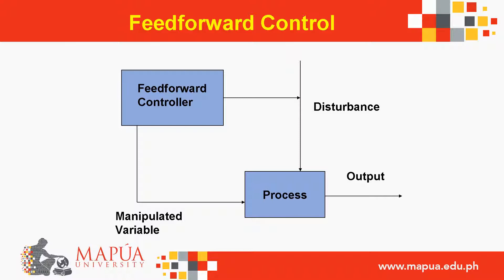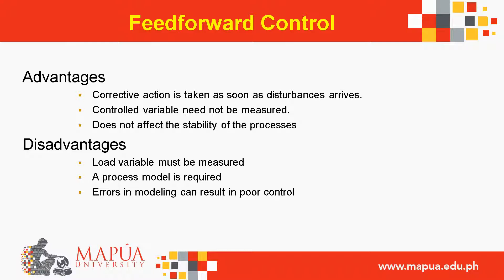Here is the block diagram for a feedforward control. Feedforward control advantages: corrective action is taken as soon as a disturbance arrives, the controlled variable need not be measured, and it does not affect the stability of the process. Disadvantages: the load variable must be measured, a process model is required, and errors in modeling can result in poor control.